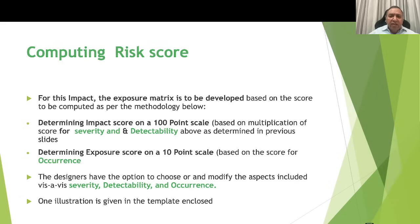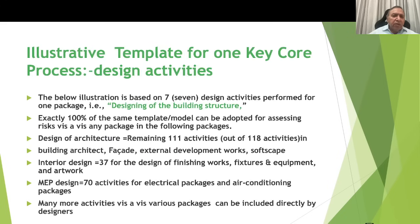Computing the risk score: the impact and exposure in a matrix is to be developed based on computed scores. The impact score is based on a multiplication of the severity score and detectability score on the Y-axis, and the exposure score is determined on a 10-point scale on the X-axis vis-à-vis the occurrence score. Designers have the option to choose and modify the aspects included in severity, detectability and occurrence, and can delete irrelevant points or add more. One illustration is given in the enclosed template for one key core process, based on 7 design activities performed by designers for designing the structure of a building.